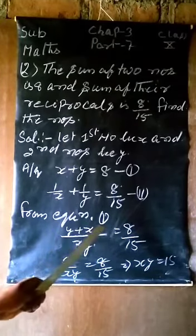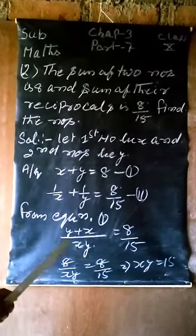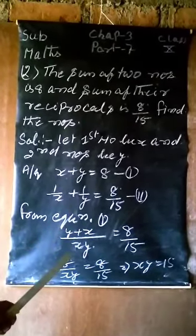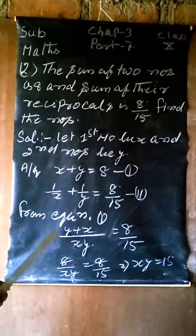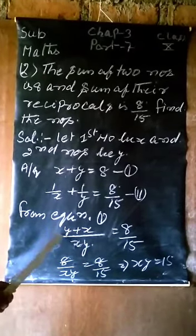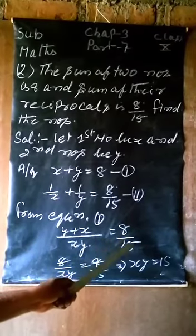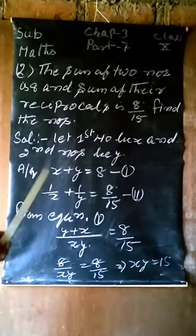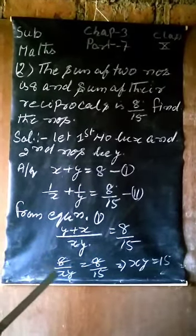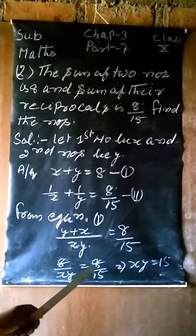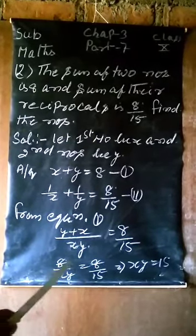From equation second, we get if we take LCM, it becomes y plus x over xy. And if we simplify, y plus x equals 8 by 15 times xy. x plus y value is 8, so 8 by xy equals 8 by 15. 8 cancels, so xy equals 15.